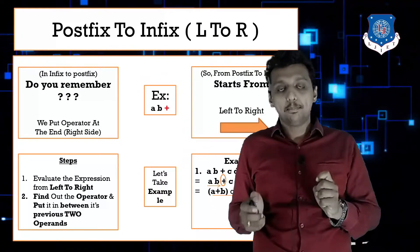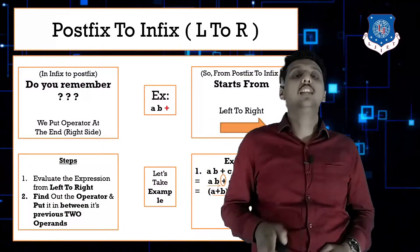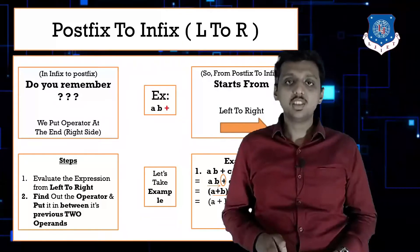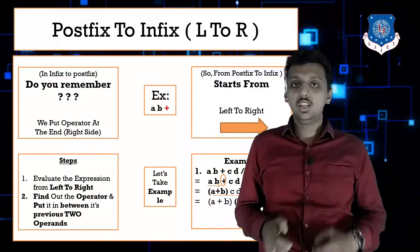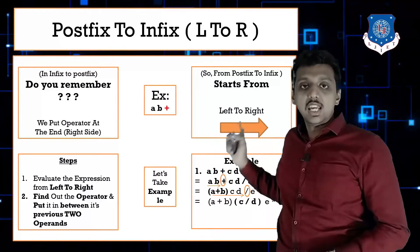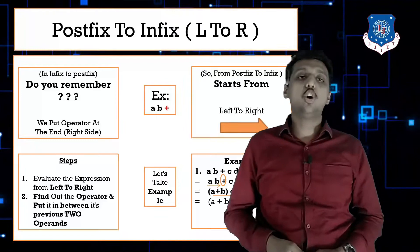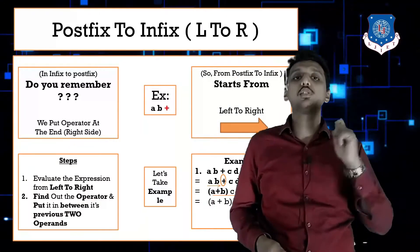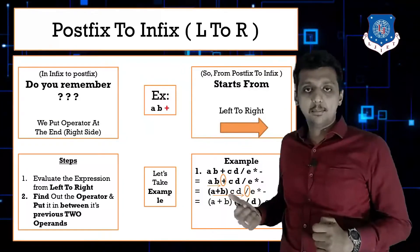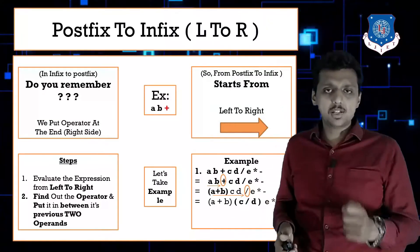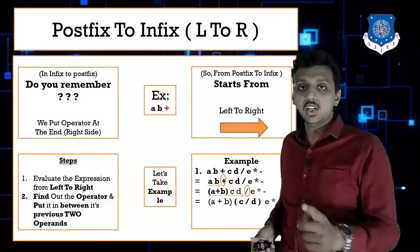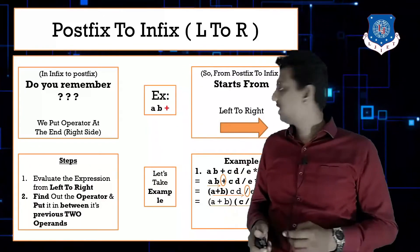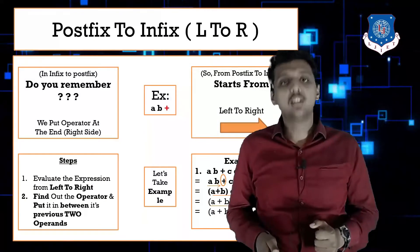When traversing left to right, division is found as the next operator. Place division between its previous two operands, c and d, giving (c/d). Next, continuing left to right, the star (*) operator is found. The previous two operands of star are (c/d) and e, so put star between them: c/d*e.